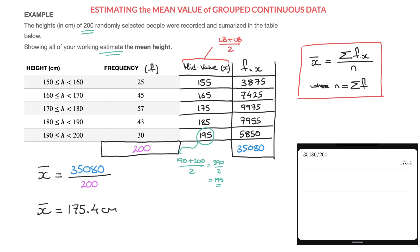Which rounding to three significant figures, we could say that the mean height, so x with a bar on top of it, is equal to 175 centimeters. And that's the final answer.